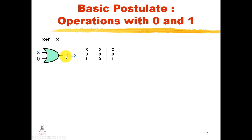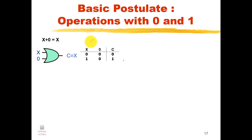The basic postulates deal with operations with zero and one. For X OR 0 = X: with a truth table having one variable and two combinations — zero OR zero equals zero, one OR zero equals one — so the output C equals X. For X OR 1 = 1: zero OR one equals one, one OR one equals one, so C equals one at all times.